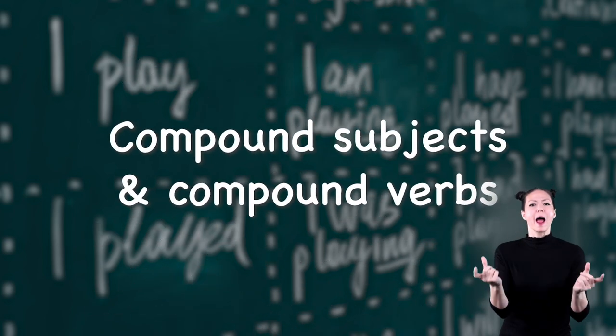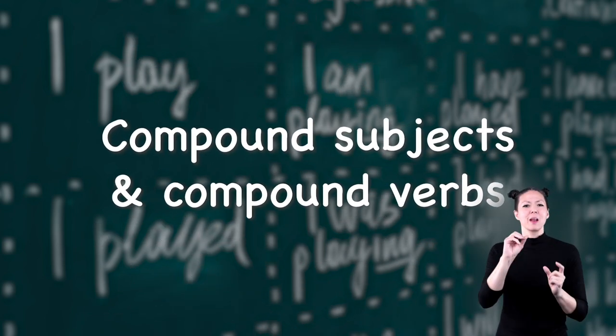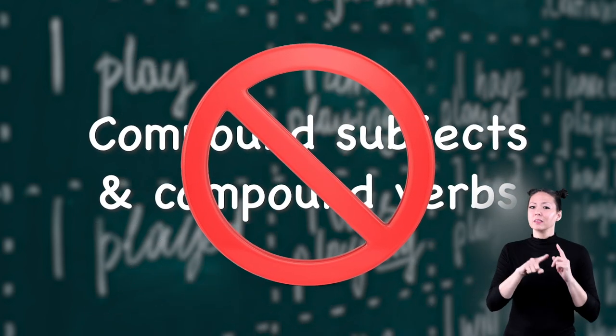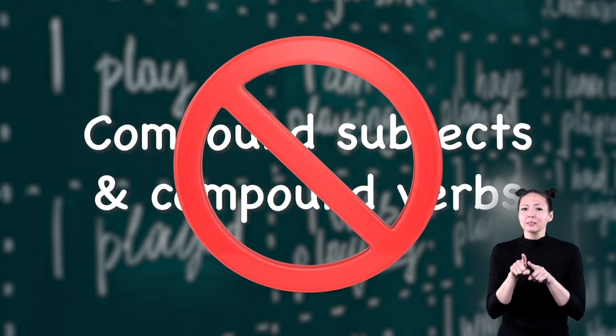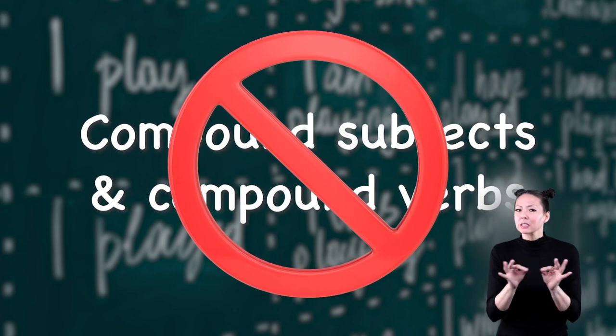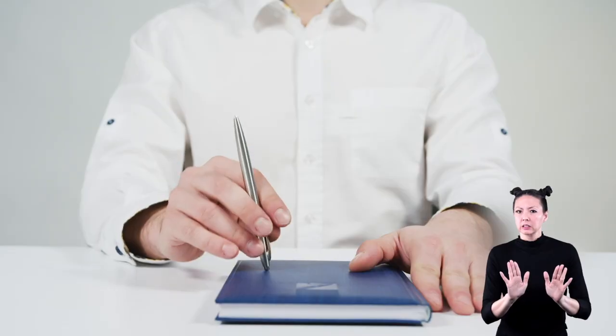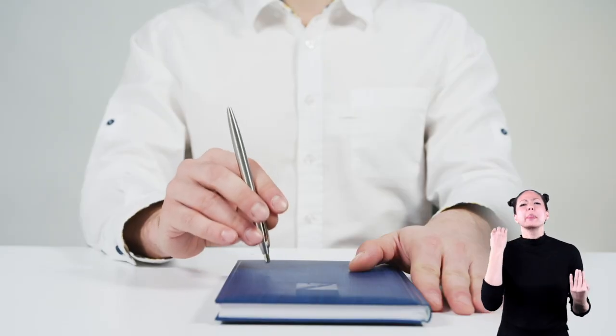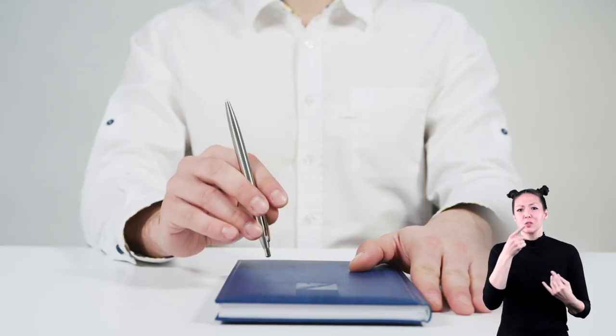Remember, simple sentences can contain more than one subject and more than one predicate or verb — they're called compound subjects and compound verbs. But they're not the same as compound sentences.